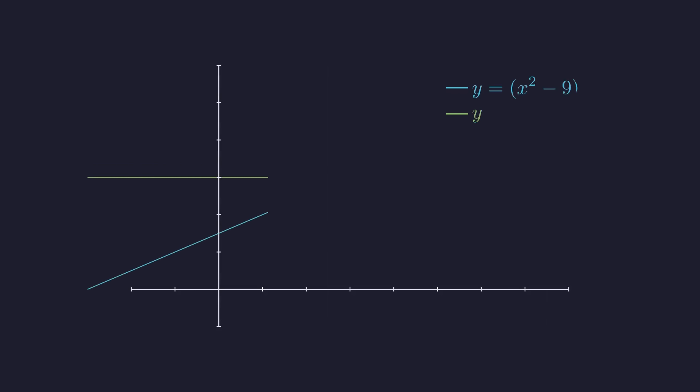We're looking for where the graph of our fraction intersects the horizontal line y = 6. After simplifying, the function is just the line y = x + 3, shown here in blue. We want to see where it crosses the green line at y = 6.